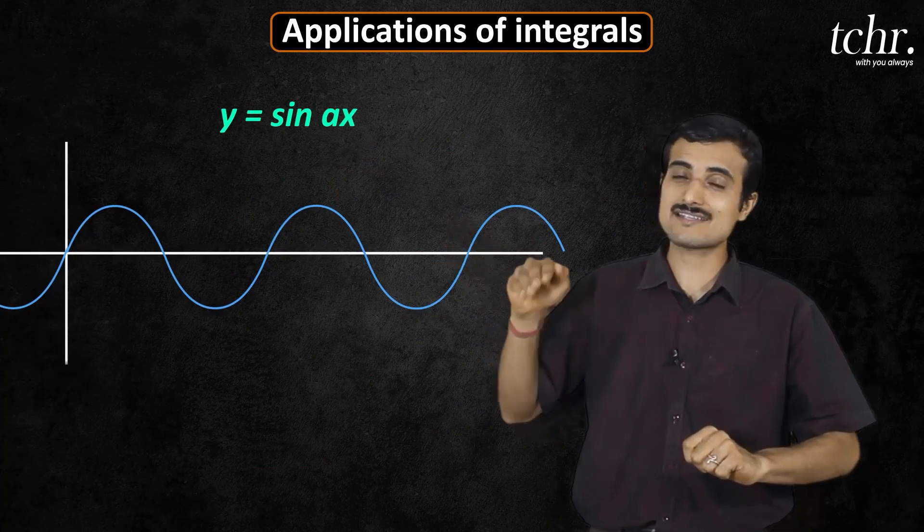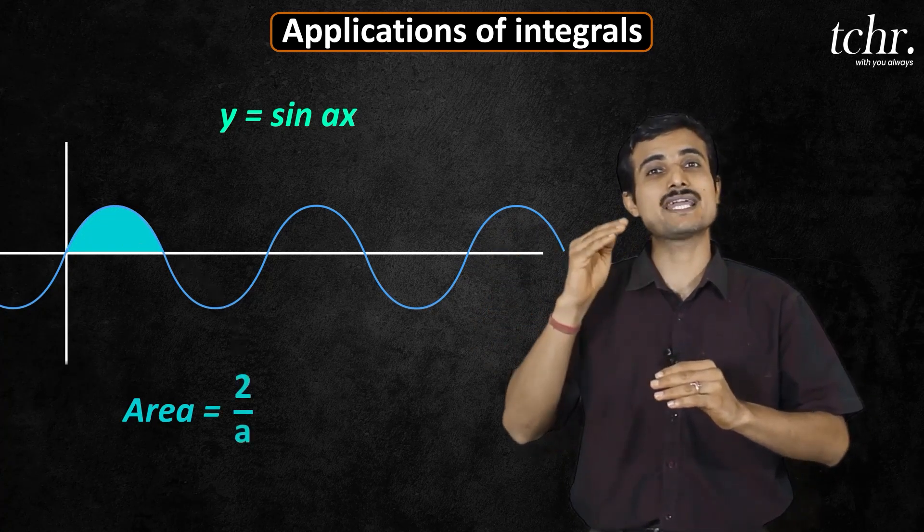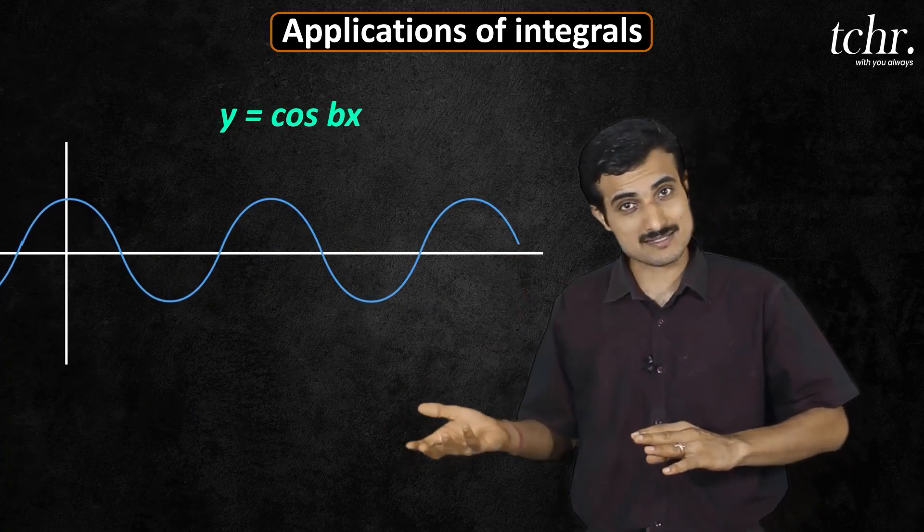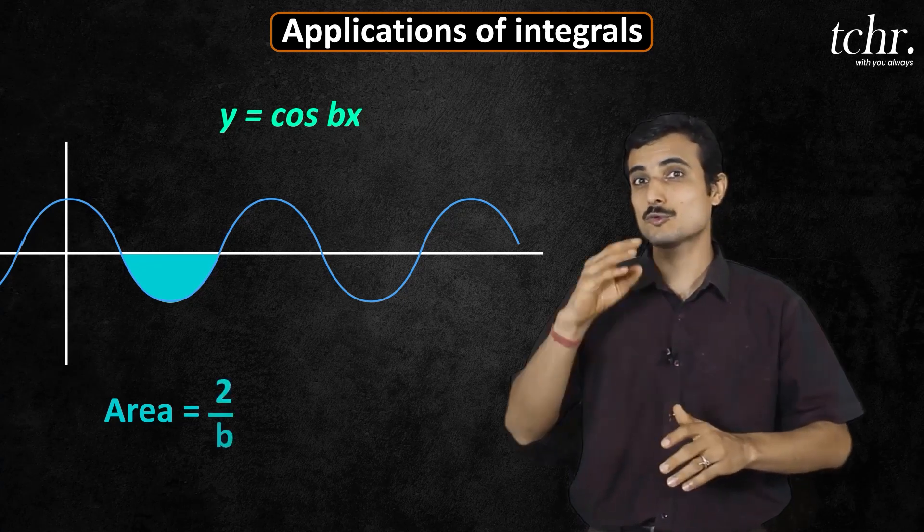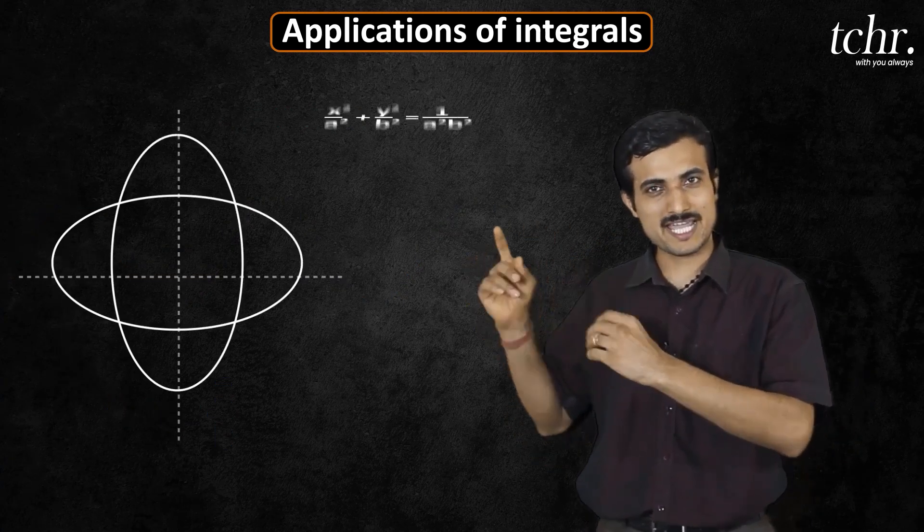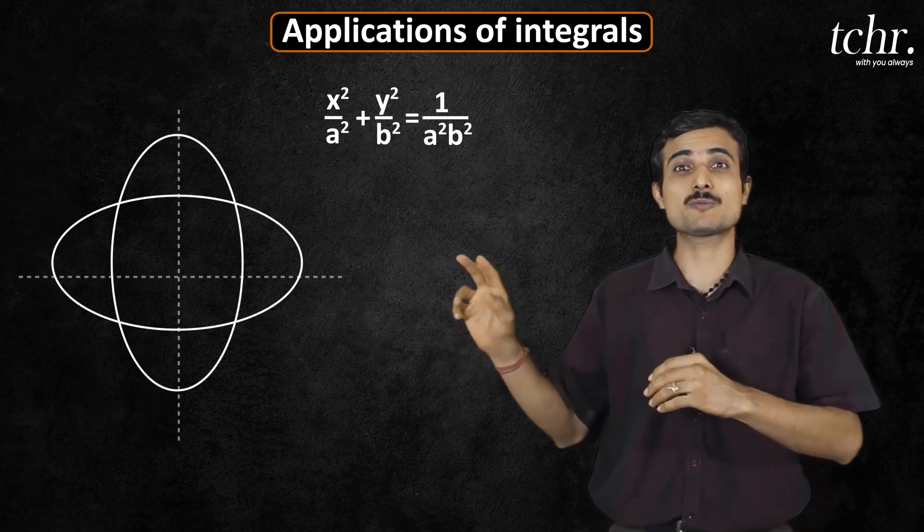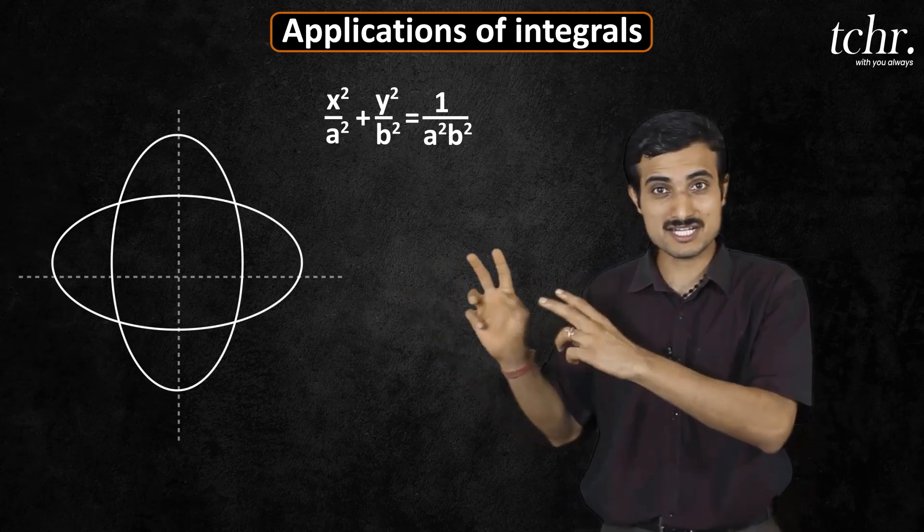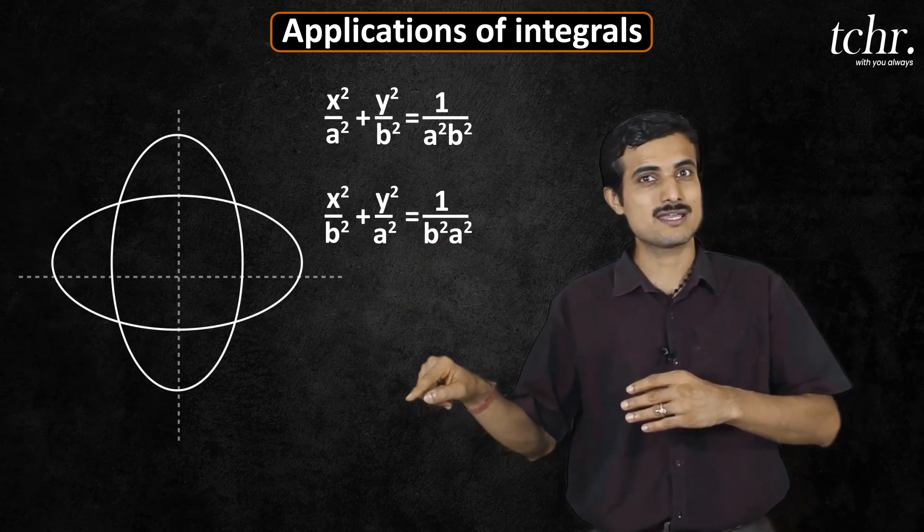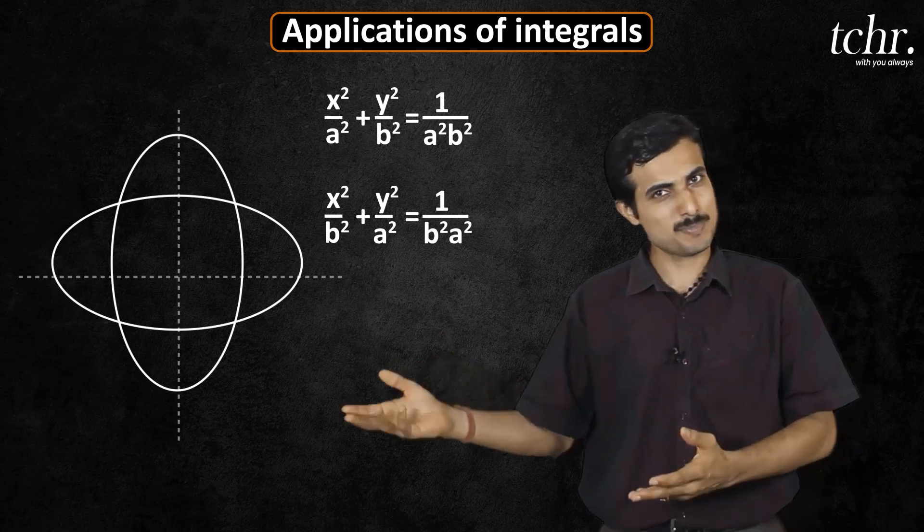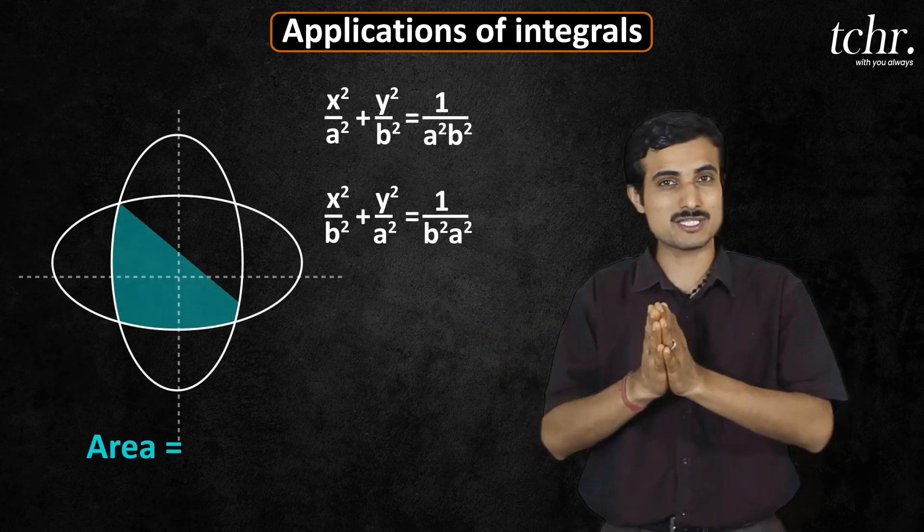y equal to sin ax is given, then area under the curve is 2 by a. y equal to cos bx, area under the curve is 2 by b. And the ellipse is given: x square by a square plus y square by b square equal to 1, so picture here, the ellipse, how do you find the area between these two curves?